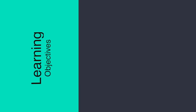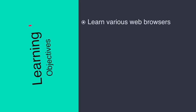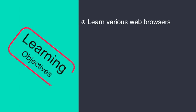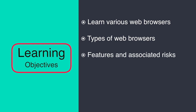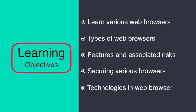In this module, we will first learn about a little background about web browsers. We will also see what types of existing web browsers there are, discuss their features and the risks associated with each. We will also learn about security measures for securing these web browsers, the list of various menu items, and the various technologies used in web browsers.